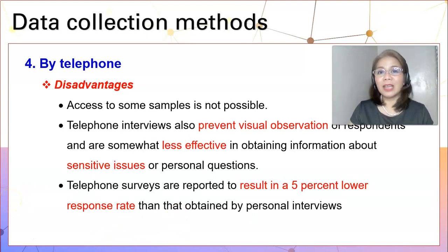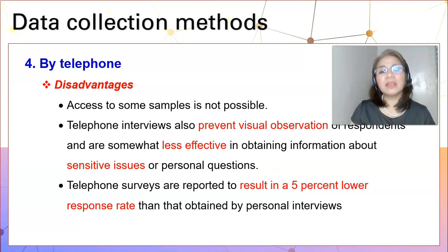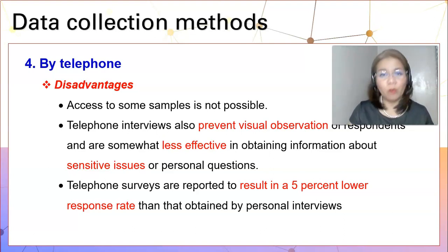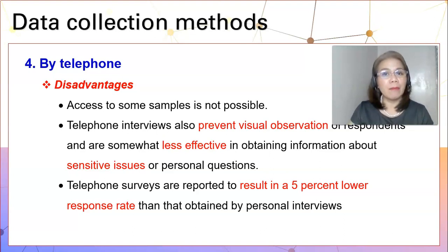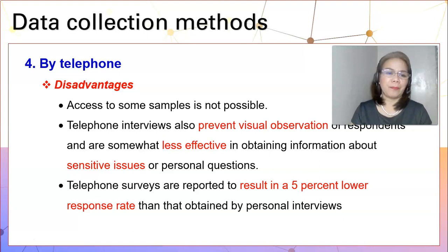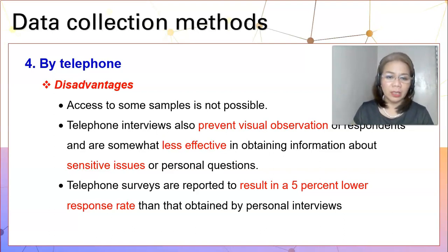Alternately, collecting data through telephone methods also has its share of limitations. One is that access to some samples is not possible — for respondents who do not have telephone lines either at home or in the office, they cannot be accessed through this method. Another limitation is that you cannot observe the reactions, facial expressions, or bodily gestures of your respondents, which contribute a lot when you gather data, especially for sensitive or personal questions. Also, telephone surveys are reported to result in a 5% lower response rate compared to personal interviews.